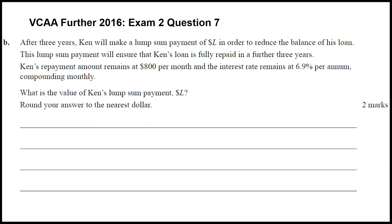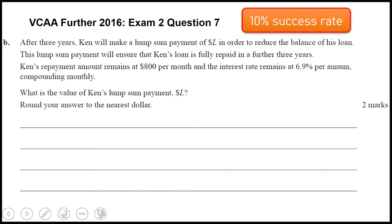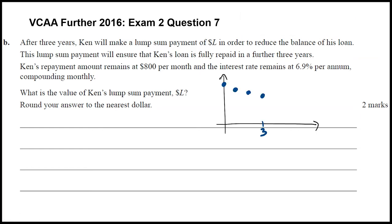Part B was the real killer question - only a 10% success rate, so out of 2 marks students were averaging 0.2 marks. After 3 years he'll make a lump sum payment to reduce the balance of his loan, and that payment would ensure that after another 3 years the loan is fully repaid. A diagram is useful here: he's paying off his loan for 3 years, then makes some immediate payment so that after another 3 years - 6 years in total - his loan is fully paid off.